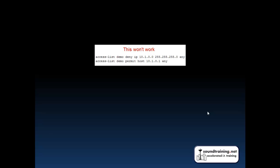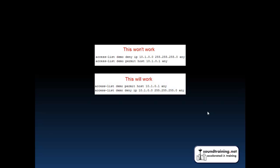Here's an example of something that won't work. Notice that at the very top we have the most general entry — 'access list demo deny IP subnet' — and then the next line is for an individual host. What happens is that the packet from host 10.1.0.1 comes in, it hits that first line, and it never makes it to the second line. Here's an example of how to do it correctly: go from most specific to most general. Very simple but an extremely important concept.